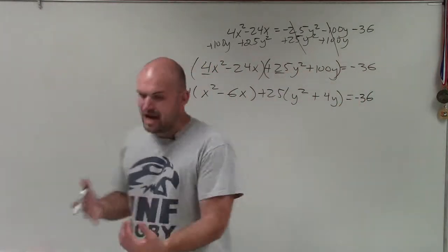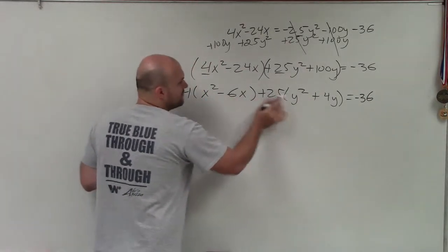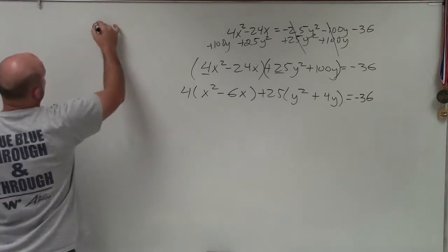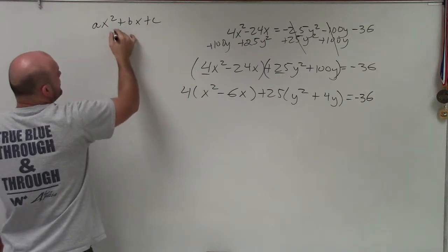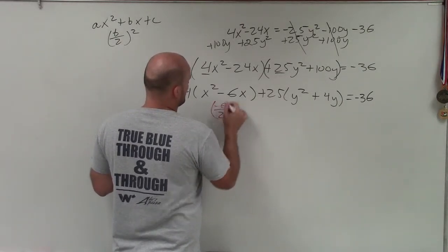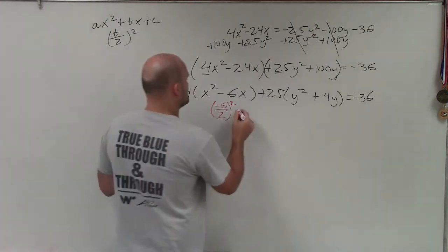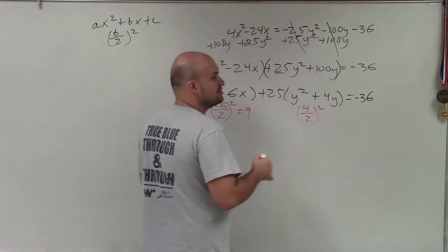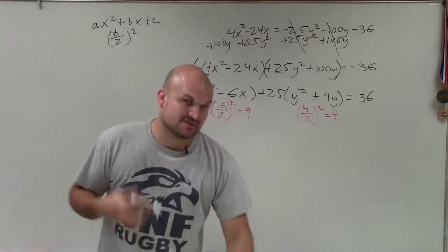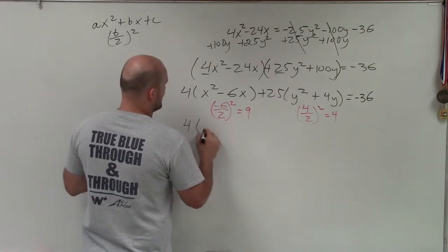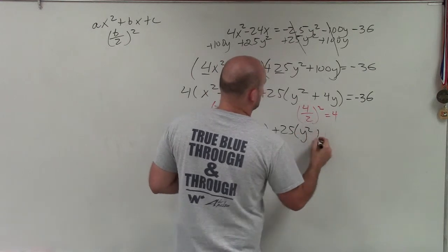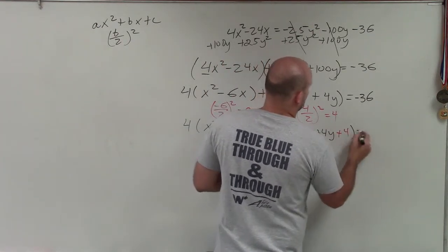Now I've created two binomials where the coefficient of the quadratic term is 1, which is very important. The next step is to take b divided by 2 and square it. For ax squared plus bx plus c, you take b divided by 2 and square it. So I take negative 6 divided by 2, which is negative 3, and negative 3 squared equals 9. Then I take 4 divided by 2, which is 2, and 2 squared equals 4. I'll add both values inside their respective parentheses: 4 times (x squared minus 6x plus 9) plus 25 times (y squared plus 4y plus 4) equals negative 36.